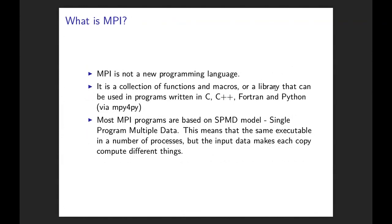Most MPI programs are based on a Single Program Multiple Data model. What this means is that you write a single program, but when you start it, you don't just run one copy — you run multiple copies, multiple clones of the program on different processors in your parallel computer. But each clone can use the input data to decide what to do. Each clone gets slightly different input data, and on this basis it can do slightly different things. And as your program is running, these instances can communicate with each other.